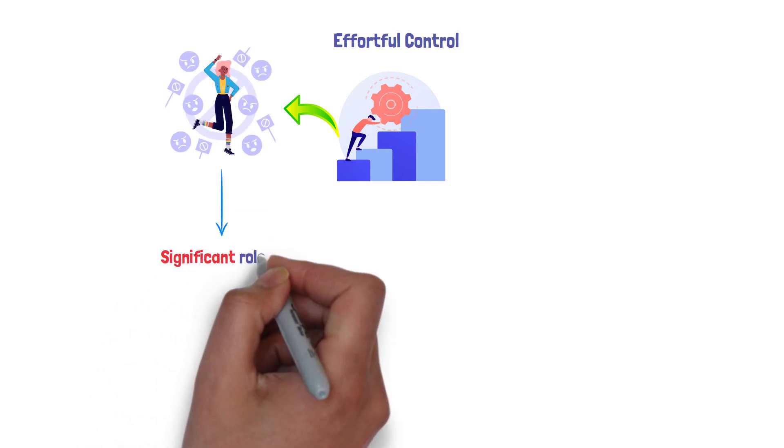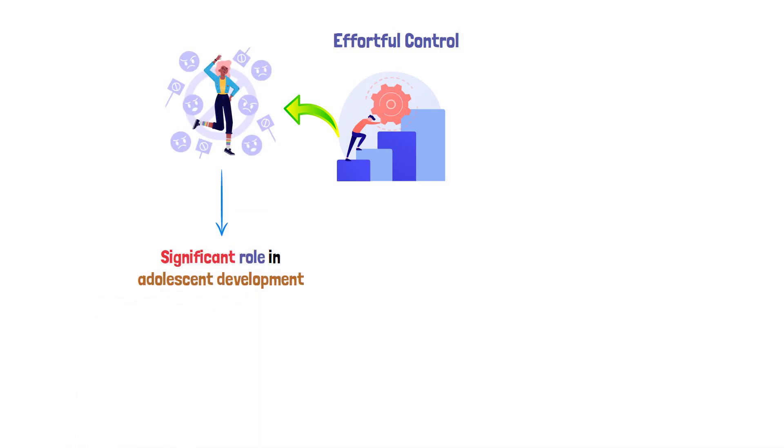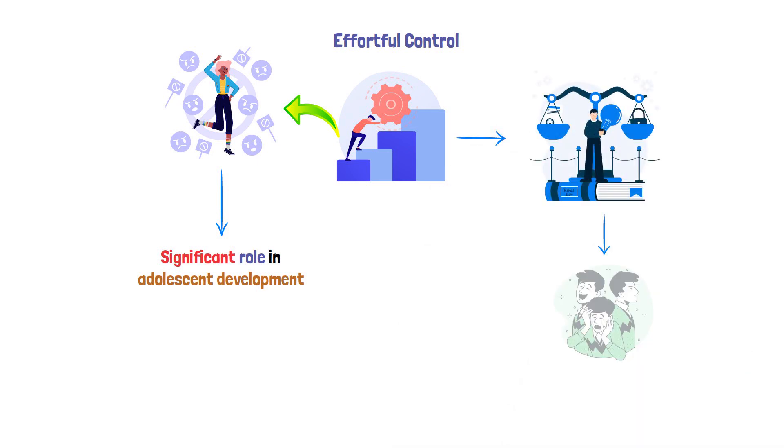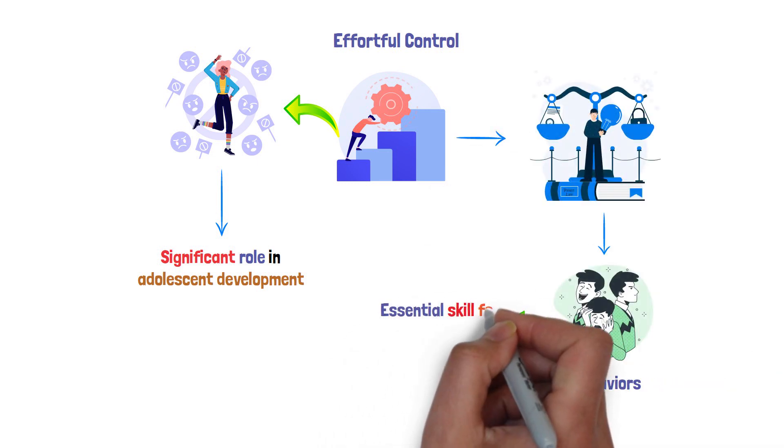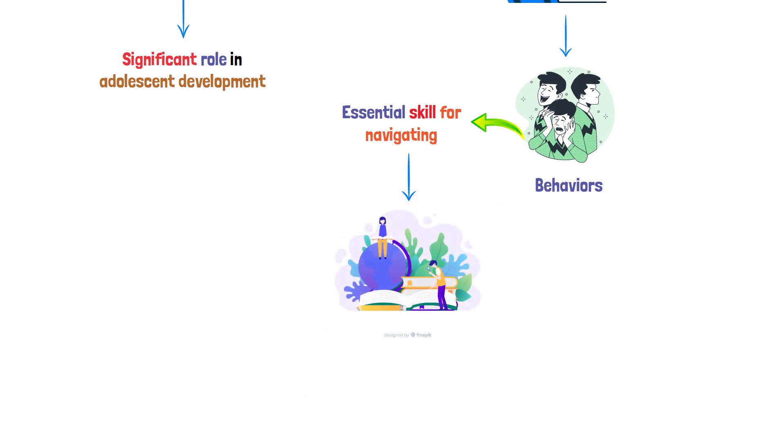Effortful control, a key aspect of temperament, plays a significant role in adolescent development. It refers to the ability to regulate one's emotions and behaviors, an essential skill for navigating the social and academic challenges of adolescence.